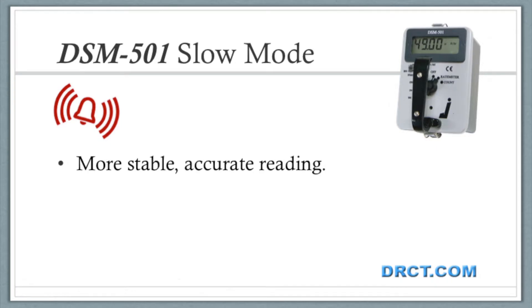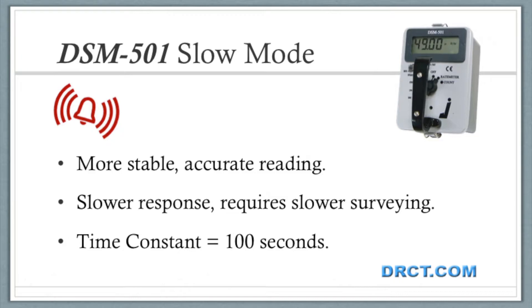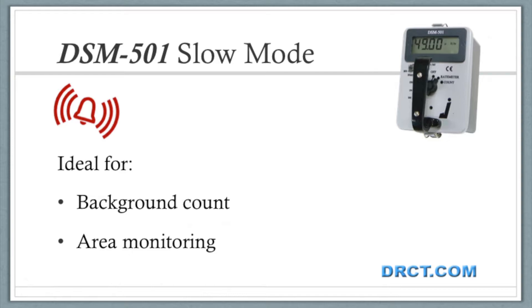Utilizing the slow mode will result in a more stable accurate reading, but it will require the operator to scan the area of interest at a much slower rate. For slow mode, the time constant is 100 seconds. This mode is more ideal for area monitoring or a background count.